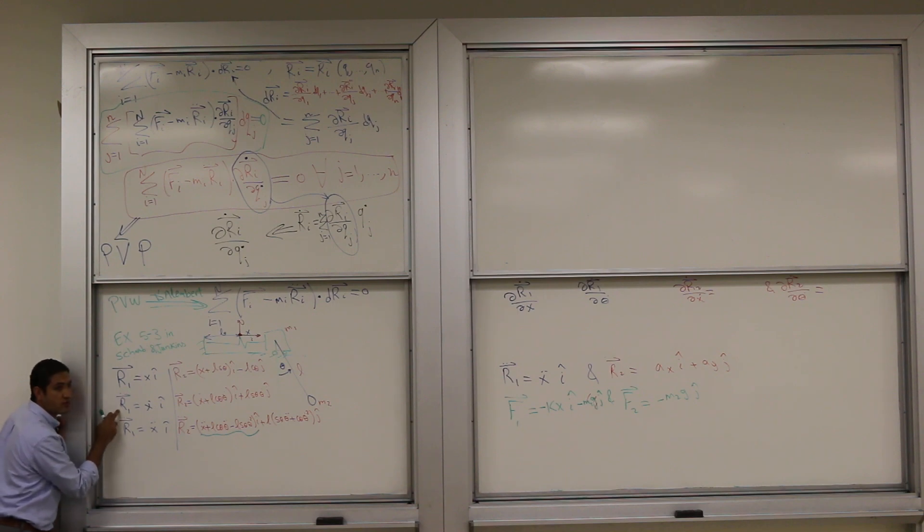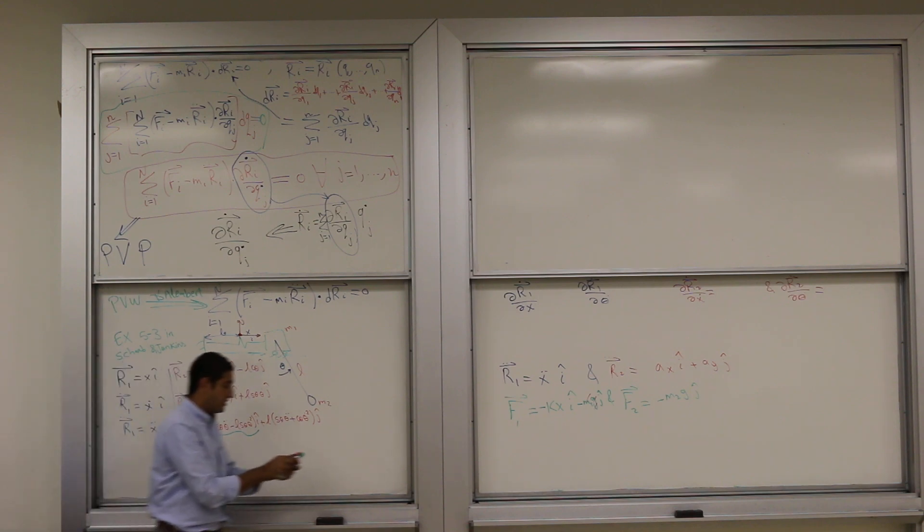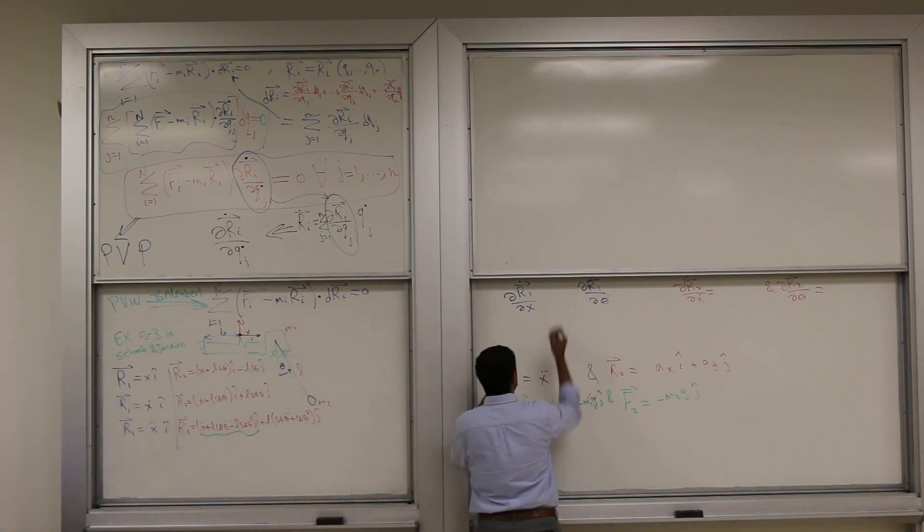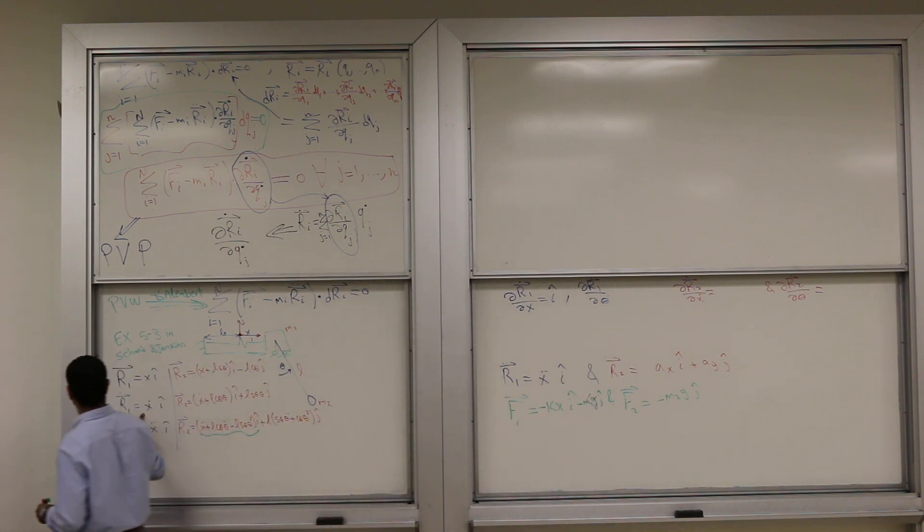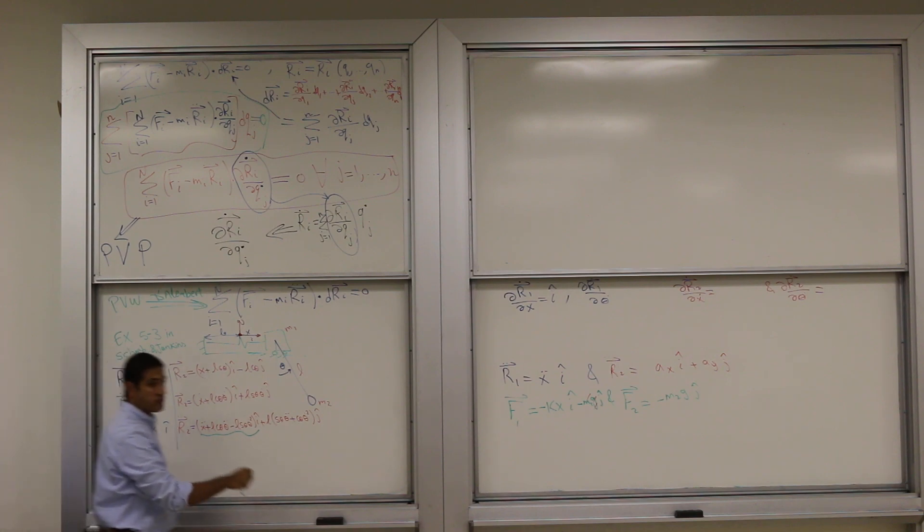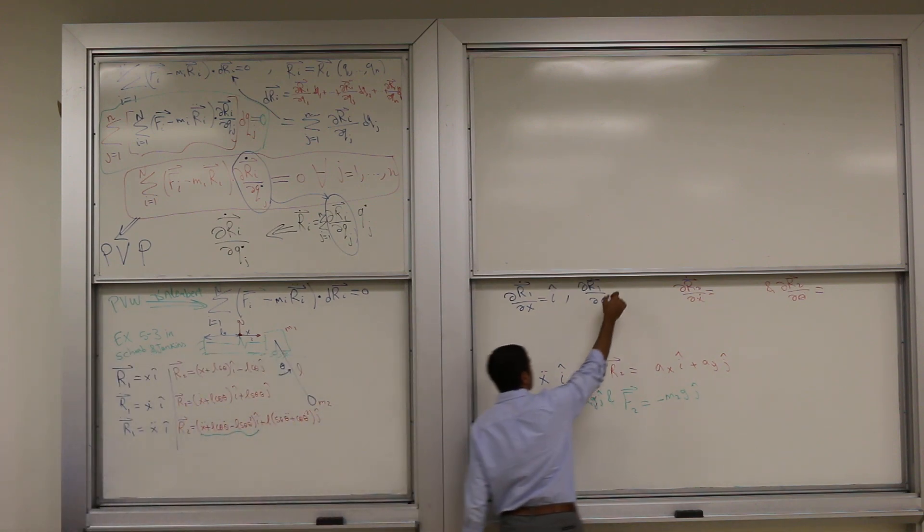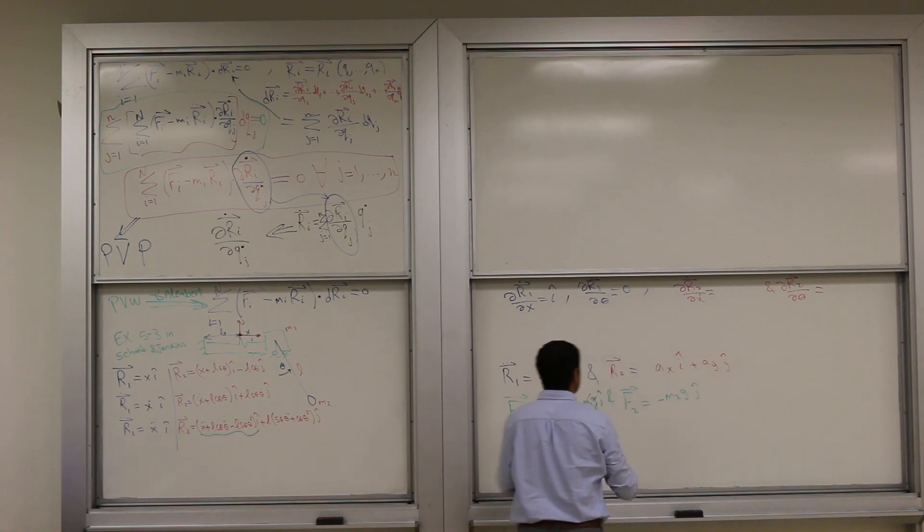What do you get if you differentiate this with respect to x dot? I. Simply i, right? Yeah, these are vectors. So I get here i. And if you differentiate with respect to theta dot, what do you get? Zero. I get zero. So this means that this particle is not affected by this degree of freedom.